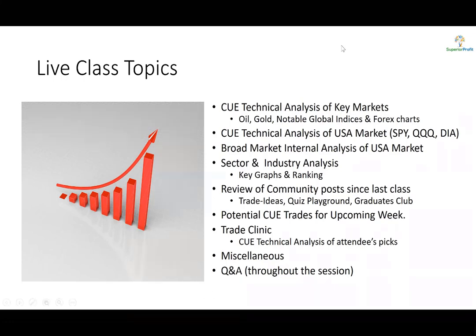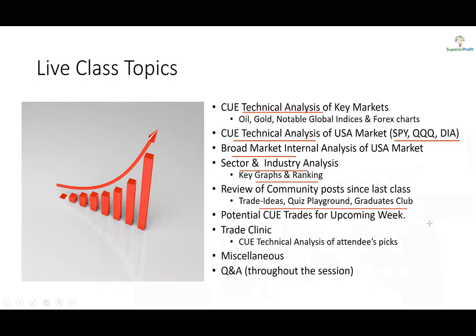We will go through several commodities including oil and gold, India Nifty Future, and a few forex pairs, looking at them through Q technical analysis. After that, we will look at SPY, QQQ, and DIA through Q technical analysis, before going into broad market internals, sector and industry analysis through graphs, ranking, and charts. We will look at some community posts shared since our last class in Trade Ideas, Who Is Playground, Graduates Club, etc., and look for potential trades for the upcoming week. Q&A is throughout the session.